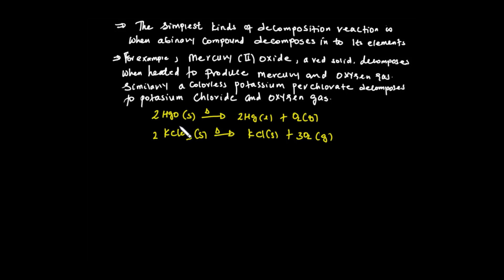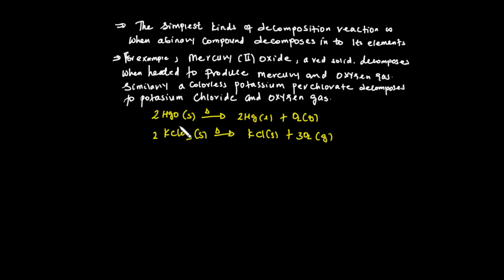Decomposition reactions involve the breaking down of a single substance — a single compound — into two or more elements or simpler compounds, using energy. You need to list the four types of chemical reactions and define both combination reaction and decomposition reaction, giving appropriate examples for each.